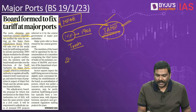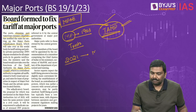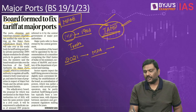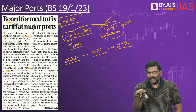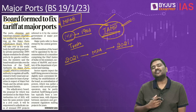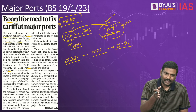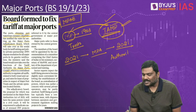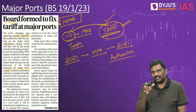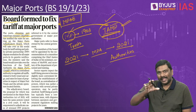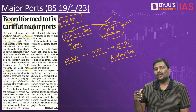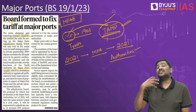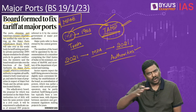Under the Major Port Authorities Act of 2021, instead of trusts the entities are now called Major Port Authorities. Unlike the earlier situation, these are authorities — not trusts — with a large amount of decision-making power given to them. The composition was changed, the power structure was changed, and the functions these authorities would perform were all revised by the government.